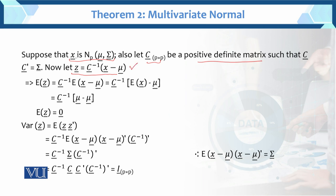What is the transformation? Since x follows the multivariate normal distribution, the transformed variable z should also follow the multivariate normal distribution. Taking the expectation: c inverse is applied, and we get c inverse times the expected value of (x minus mu). Since the expected value of x equals mu, mu minus mu cancels out. So the expected value of z equals zero.